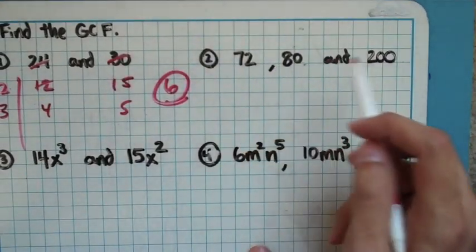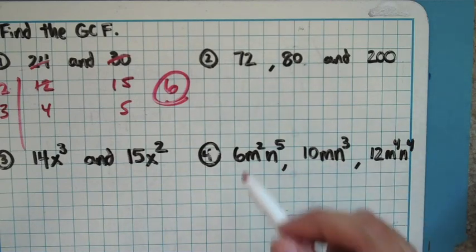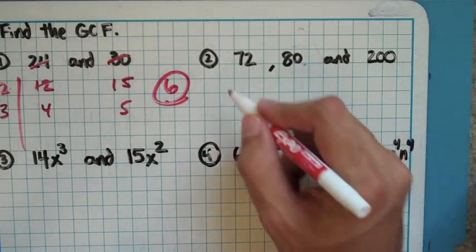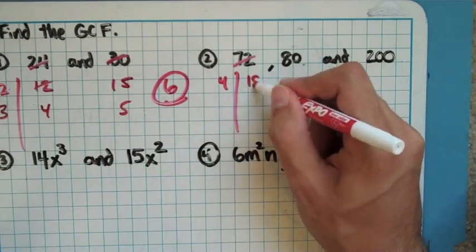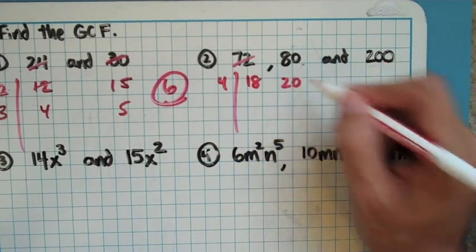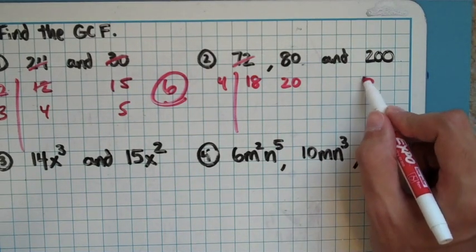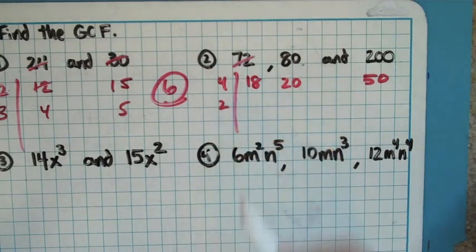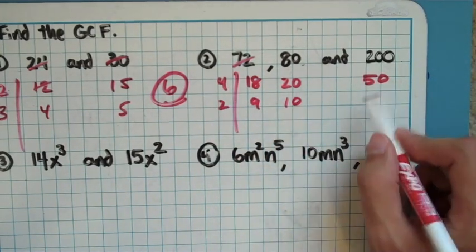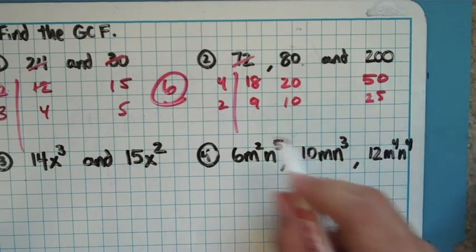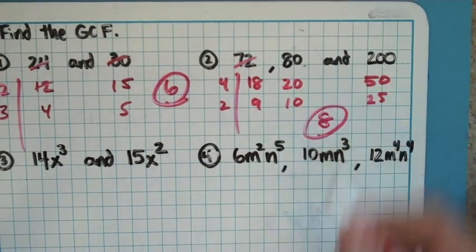If you have three numbers, you have to make sure it goes into all three parts. So that's the only difference there. I'm going to look at this, and I think 4 goes into everything here. So I'm going to take out a 4, and that should give me an 18 over here, a 20 over here, and a 50 over here. Those are all even numbers, so I know 2 goes into them. I'll end up with a 9, a 10, and a 25. And there's nothing else that goes into 9, 10, and 25. 4 times 2 makes 8 for my GCD.